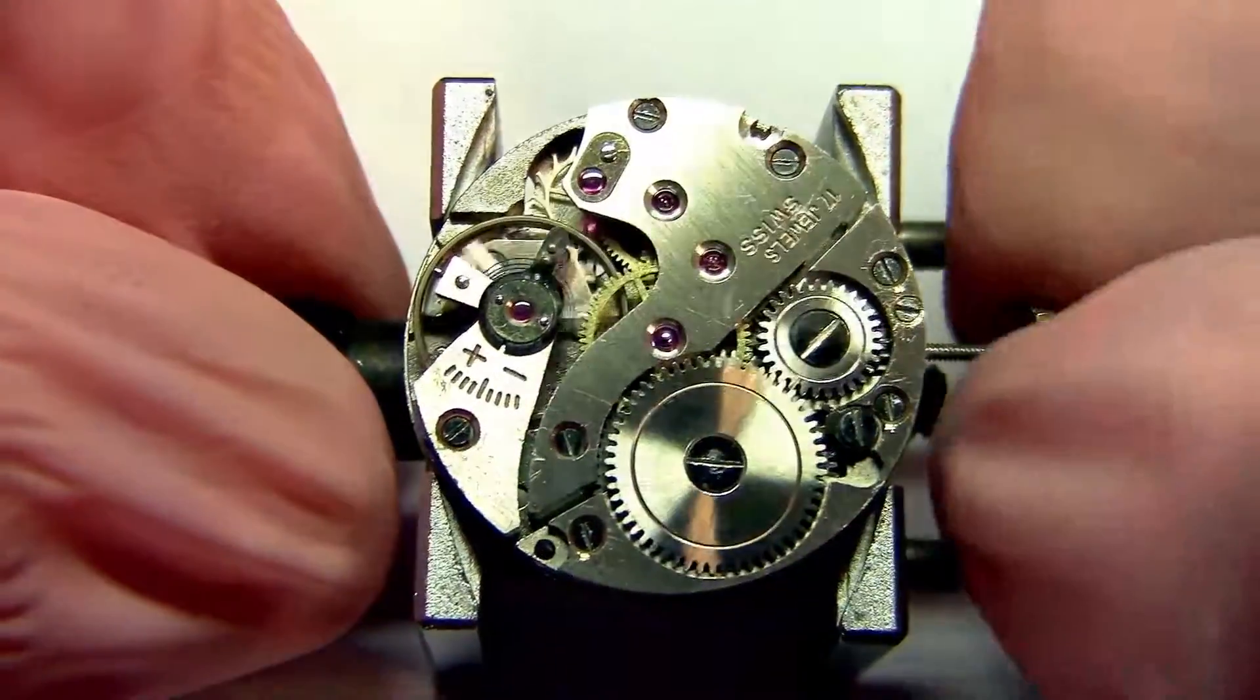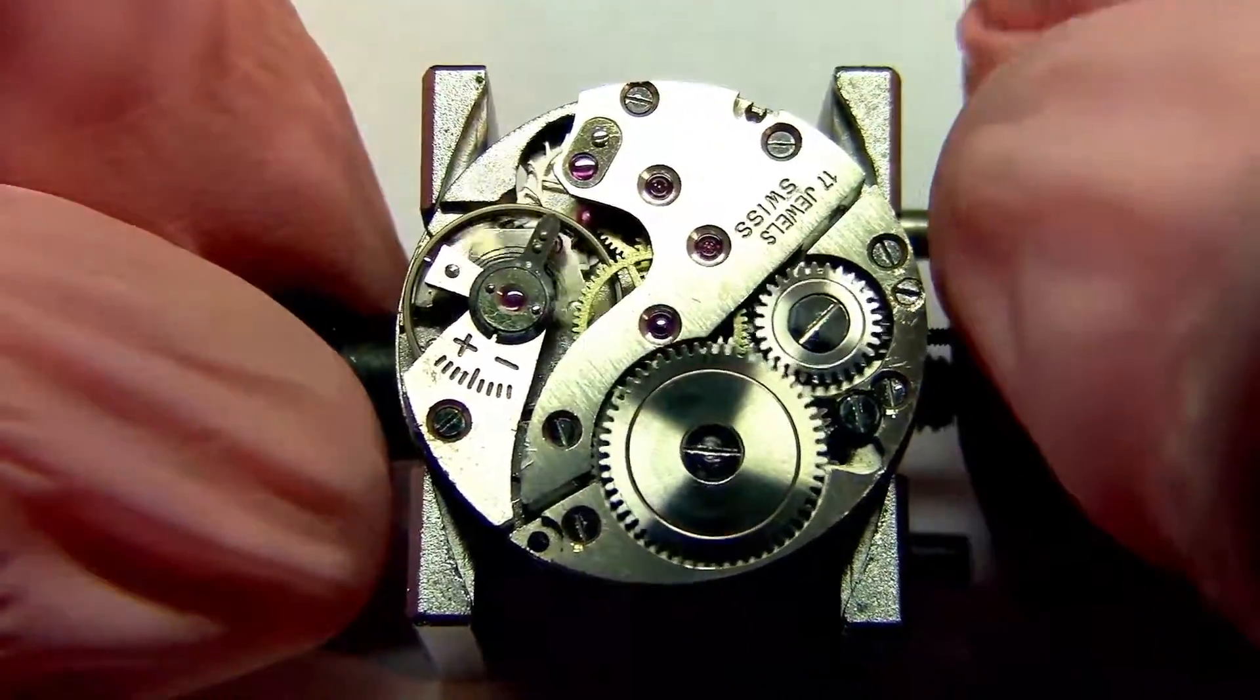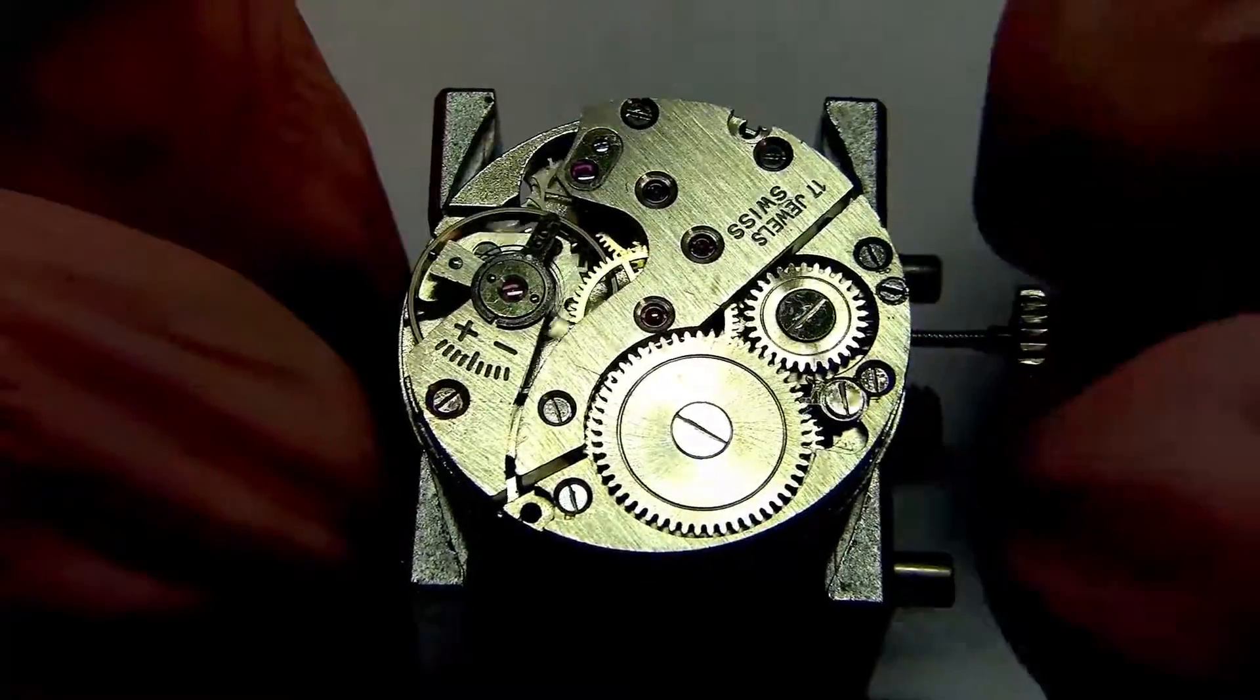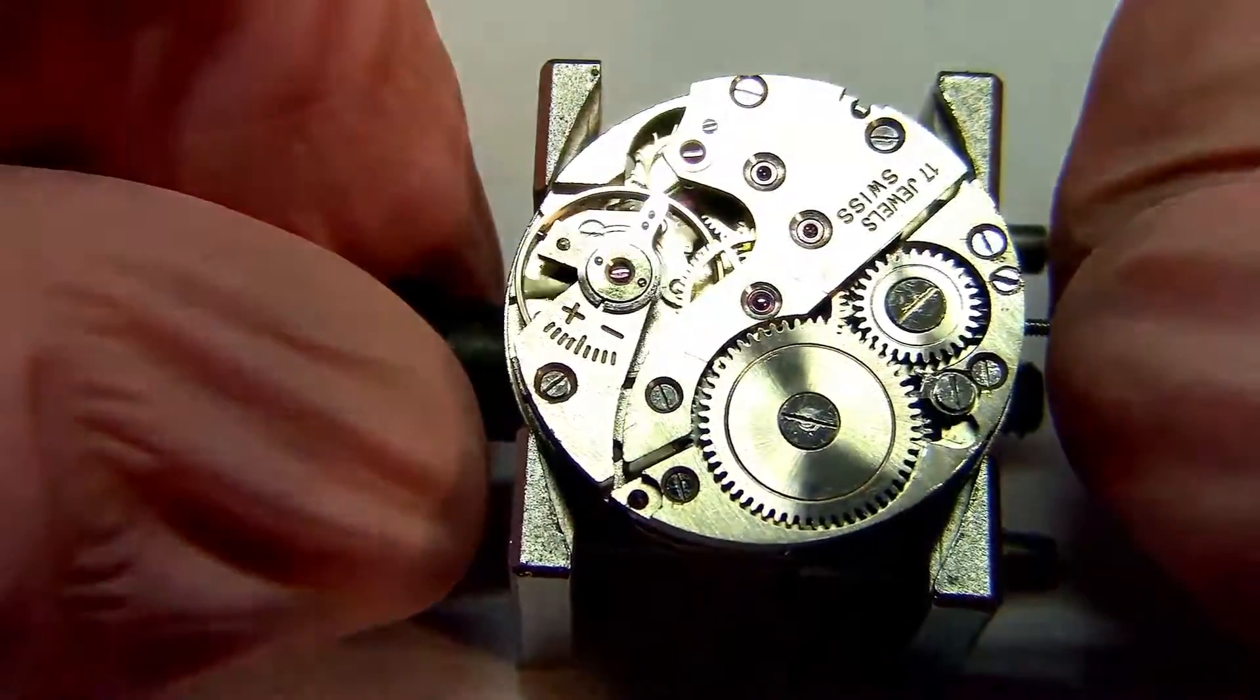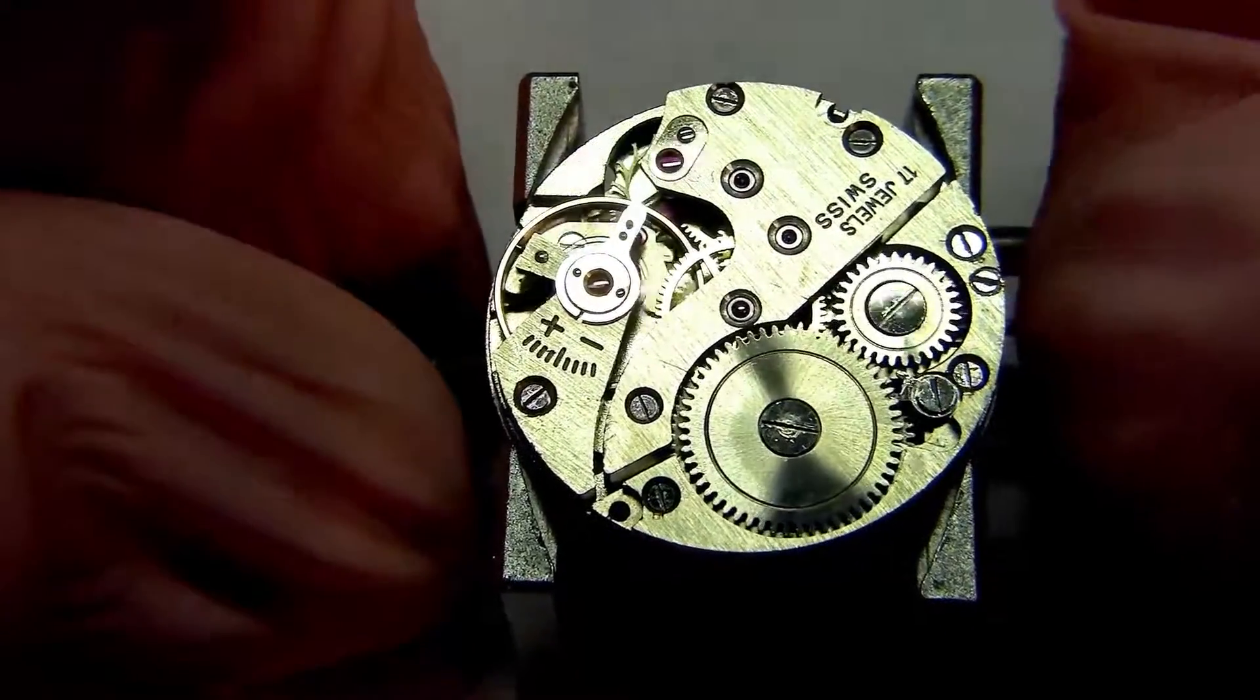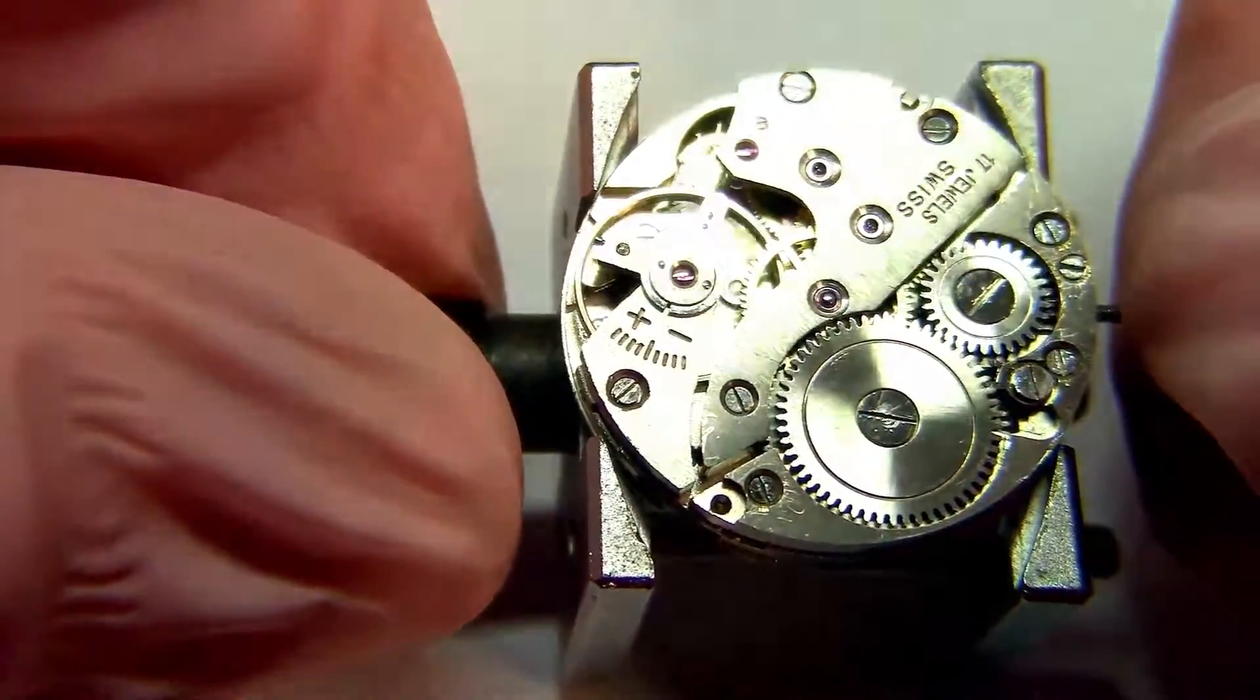So let's wind it up fully. So that little noise that we hear when we are winding it up is actually the action of the click itself, the click moving through the teeth of the ratchet. And here the mainspring is fully wound. And as you can see, the movement is working at its full power.